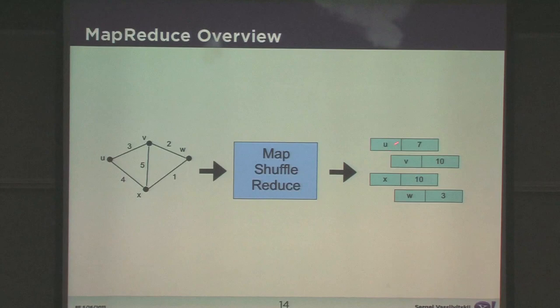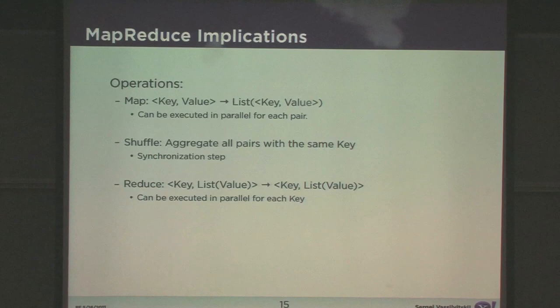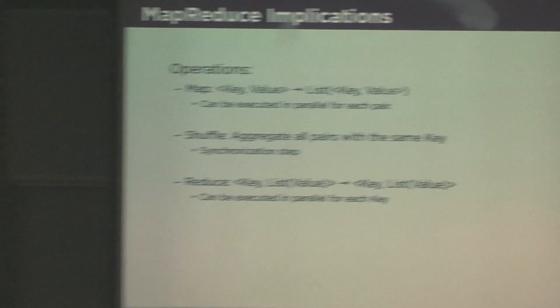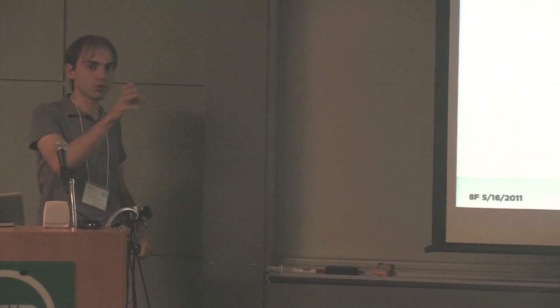Now why is this nice? So the map task, again, I said every key value pair, you have to work on it one at a time. So I can parallelize these if I want to. What I do on one key value pair is independent data-wise of the other key value pair. So there's no need for them to be on the same machine. They could be done in a distributed fashion.